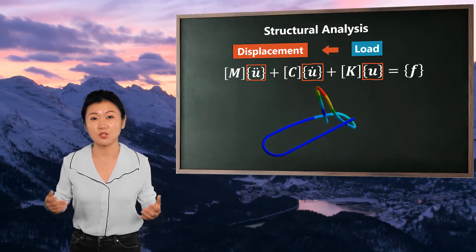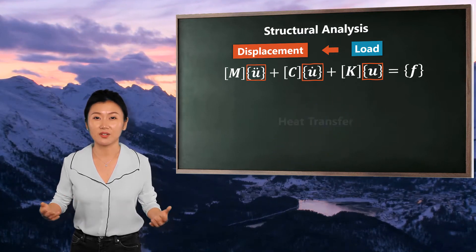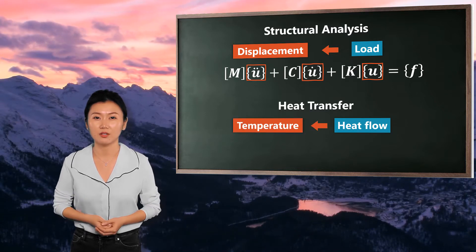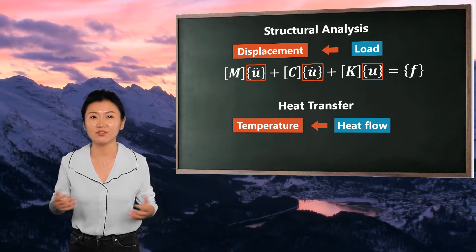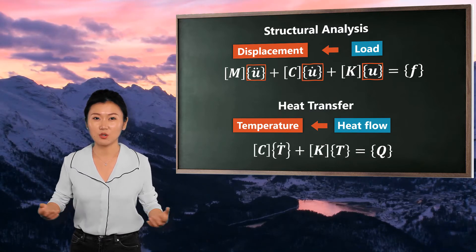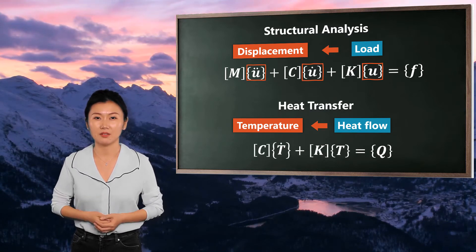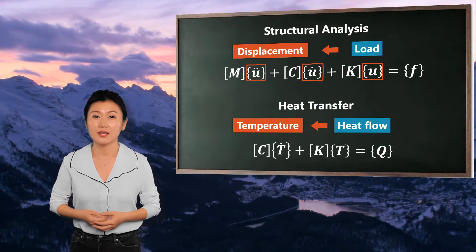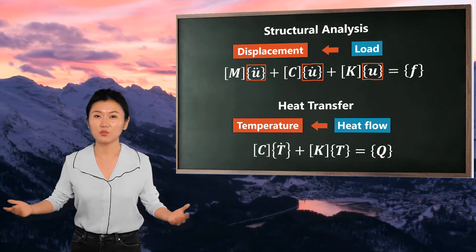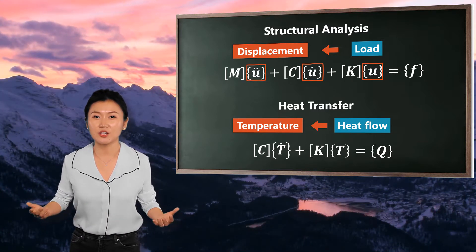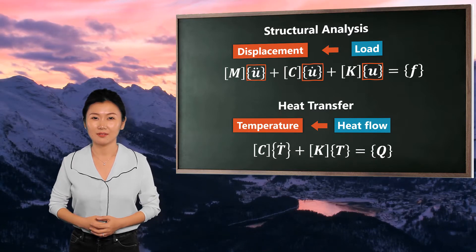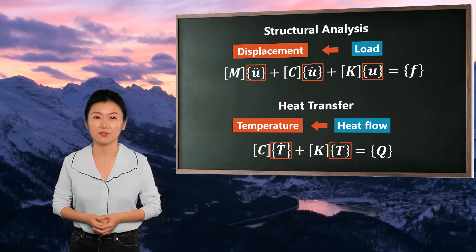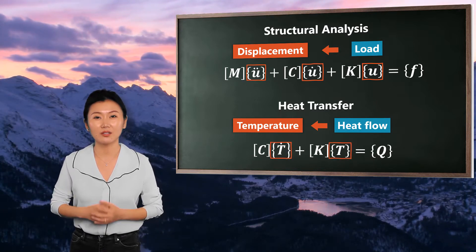As structural analysis relates force to displacement, heat transfer is no more than the study of the relationship between heat flow and temperature. For heat transfer, you will see a similar but different governing equation. The variables are different, but the format is similar. On the left side of the equation, we have matrices multiplied by vectors — the vectors are our unknowns. On the right side, it's a single vector representing the load. In a heat transfer problem, our unknowns are temperature and its time derivative, and our input — the so-called load — is heat flow.